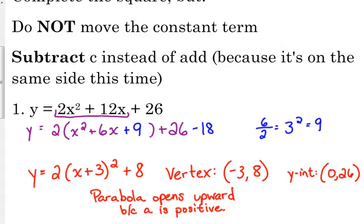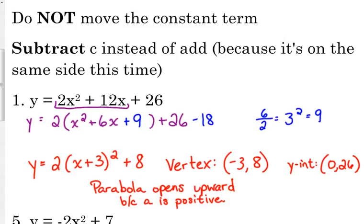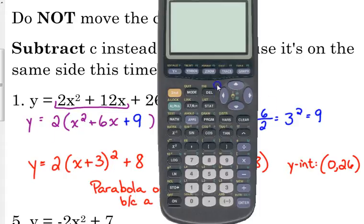So we could draw a decent little sketch of this parabola because we know the code opens, we know its vertex, and we know its y-intercept. We could at least get a general idea of what it looks like. Now, just like with some of the other things, you can check this.